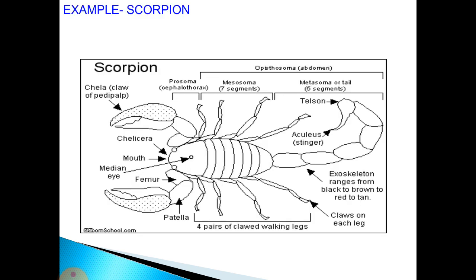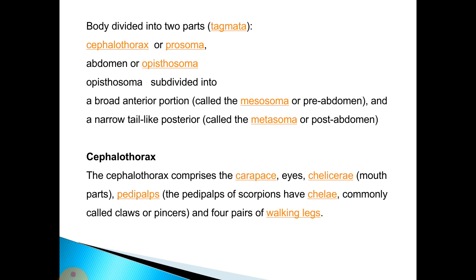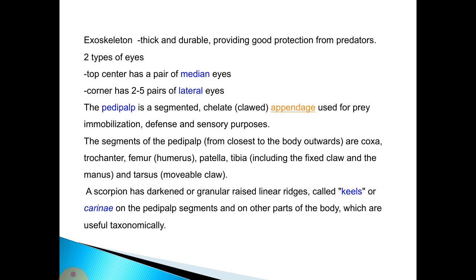An example is the scorpion. The body is divided into two tagmata: cephalothorax or prosoma, and abdomen or opisthosoma. The opisthosoma is subdivided into a broad anterior portion called the mesosoma or pre-abdomen, and a narrow tail-like posterior part called the metasoma or post-abdomen. The cephalothorax comprises the carapace, eyes, chelicerae or mouthparts, pedipalps with chelae commonly called claws or pincers, and four pairs of walking legs. The exoskeleton is thick and durable, providing good protection from predators. There are two types of eyes: a pair of median eyes at the top center, and two to five pairs of lateral eyes at the corners.